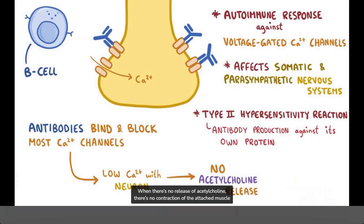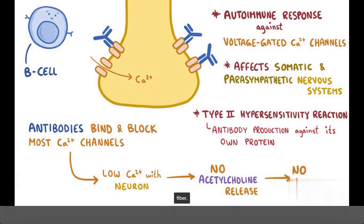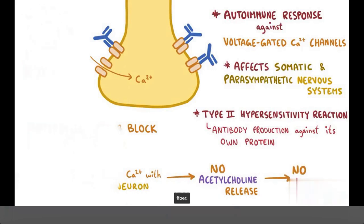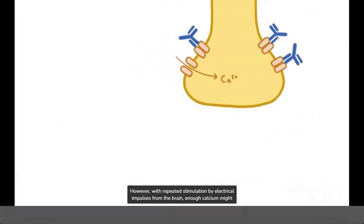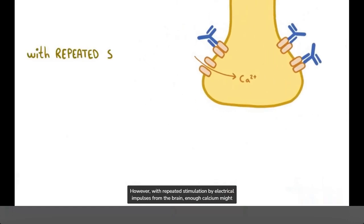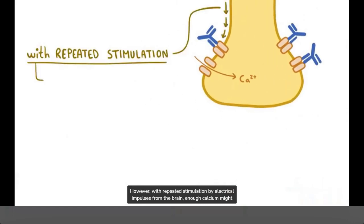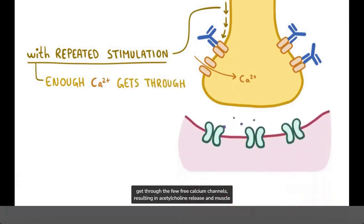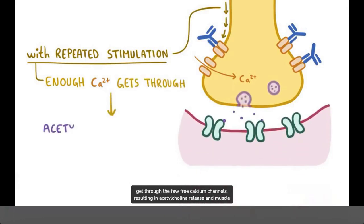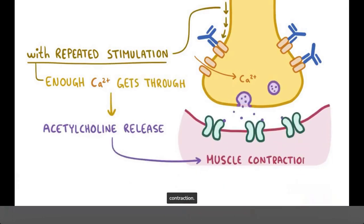When there's no release of acetylcholine, there's no contraction of the attached muscle fiber. However, with repeated stimulation by electrical impulses from the brain, enough calcium might get through the few free calcium channels, resulting in acetylcholine release and muscle contraction.